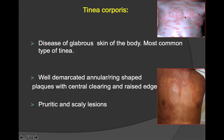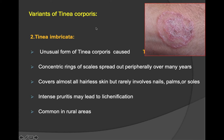Tinea corporis involves most of the glabrous skin of the body and is the most common type of tinea. There are well-demarcated annular ring-shaped lesions with central clearing, raised edges, and pruritic scaly appearance. Variants include tinea imbricata — an unusual form where concentric rings of scales spread peripherally over many years.